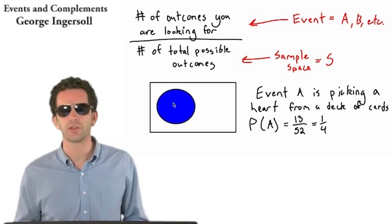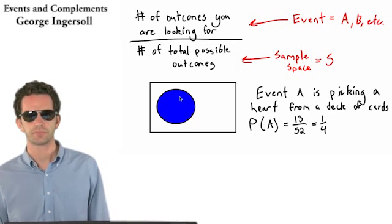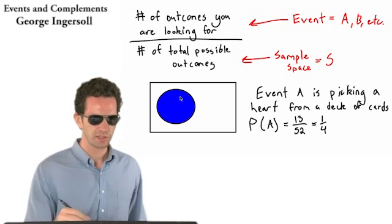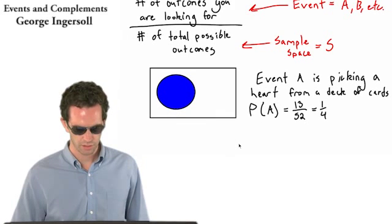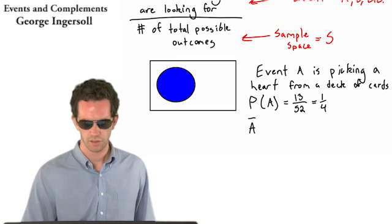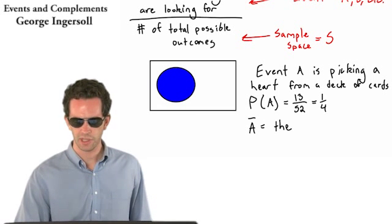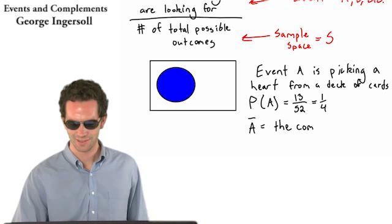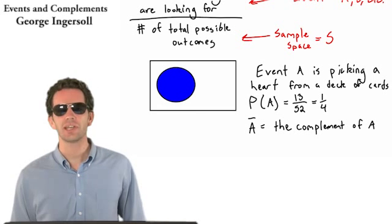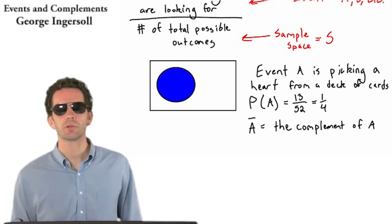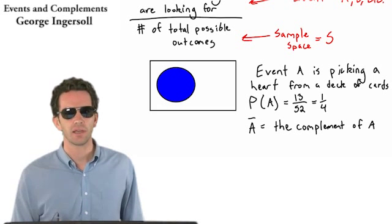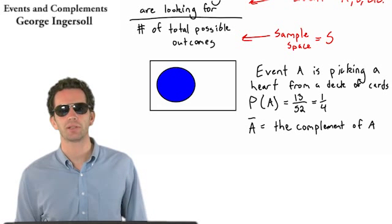We also have something that's called the complement of A. And the complement of A is denoted by this. It means everything that is not A. Which in the case of drawing a card, when we're saying A is drawing a heart from a deck of 52 cards, queen of clubs, that's in the complement of A.